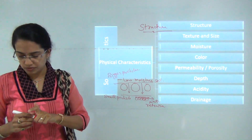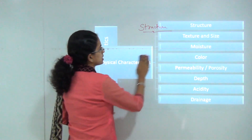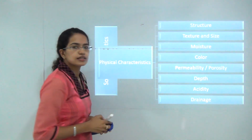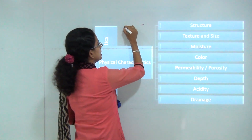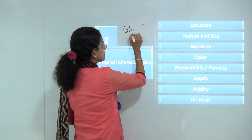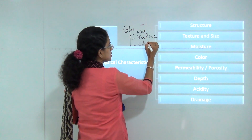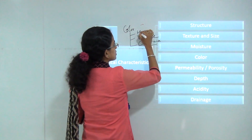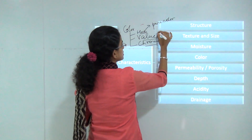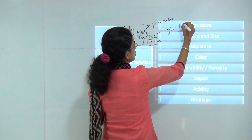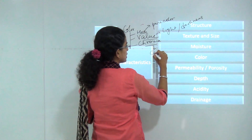Now let's understand colour, which is characterized by three basic elements: hue, value, and chroma. Hue is the pure colour, value is the lightness or darkness of the soil particle, and chroma is the colour purity.